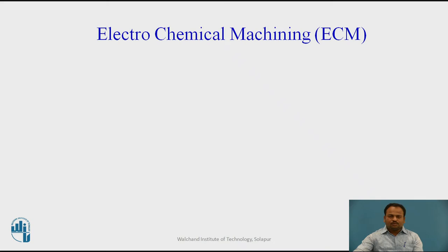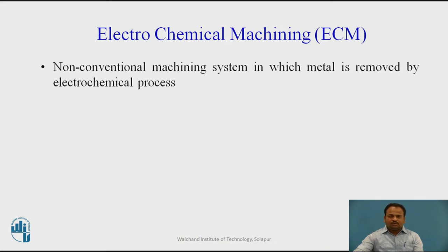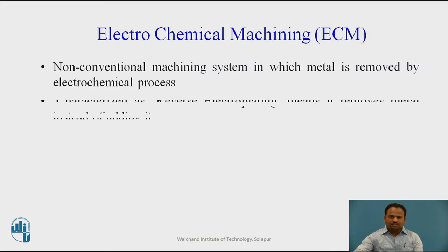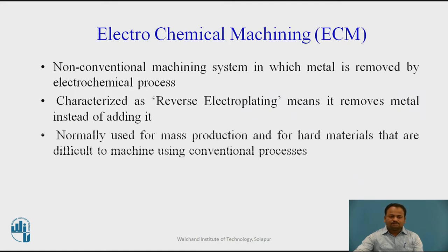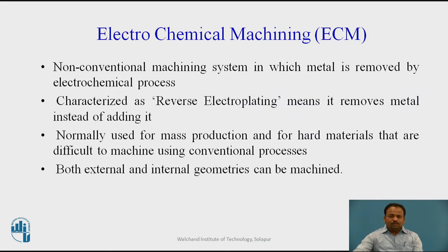What is Electrochemical Machining Process? It is a non-conventional machining system in which metal is removed by an electrochemical process. It is characterised as reverse electroplating — it removes metal instead of adding it. Normally used for mass production and for hard materials that are difficult to machine using conventional machining processes. Both external and internal geometries can be machined by this process.